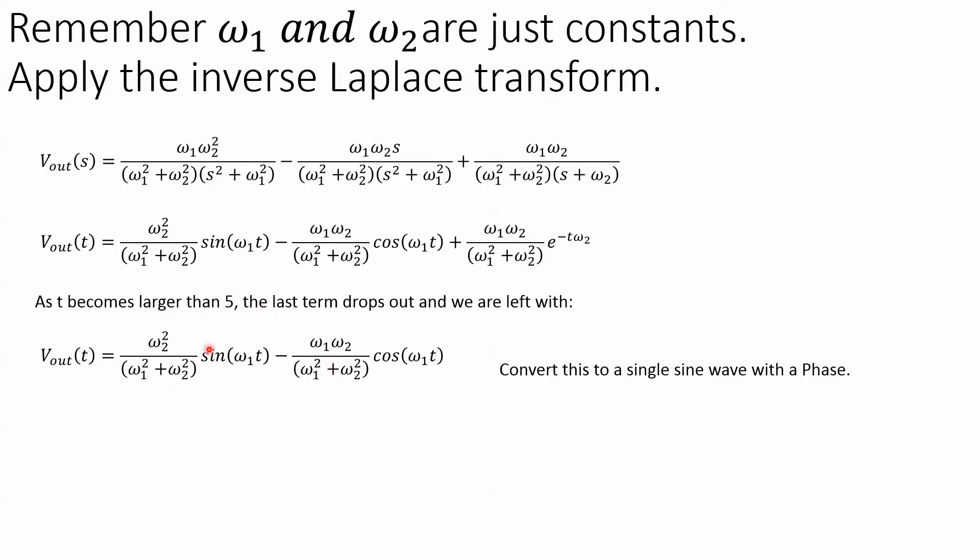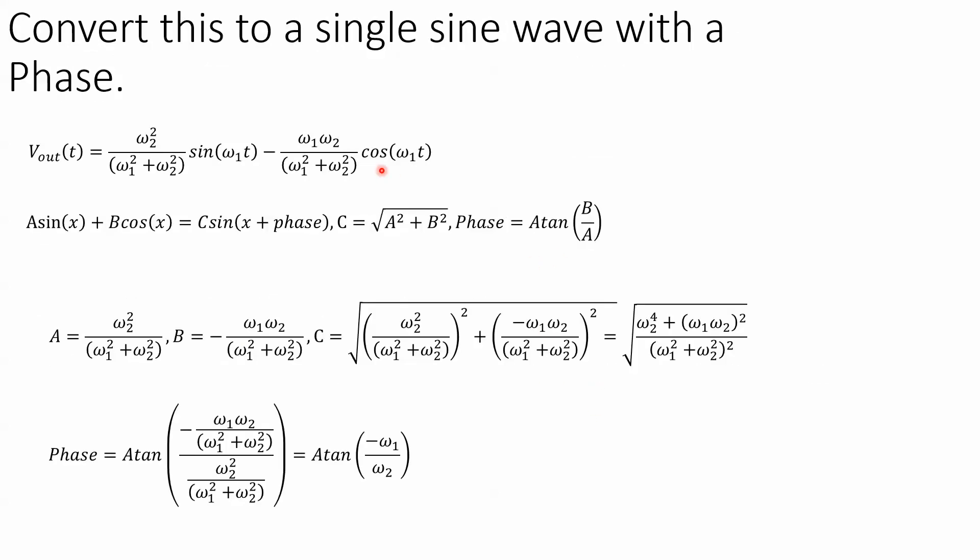And we're left with this relationship, which we can convert into a single sine wave with phase, which takes a little bit of doing. But if you use this relationship where you have a constant times sine plus a constant times b, you can get another constant times sine with a phase offset. We just have the magnitude relationship here and the phase relationship here.